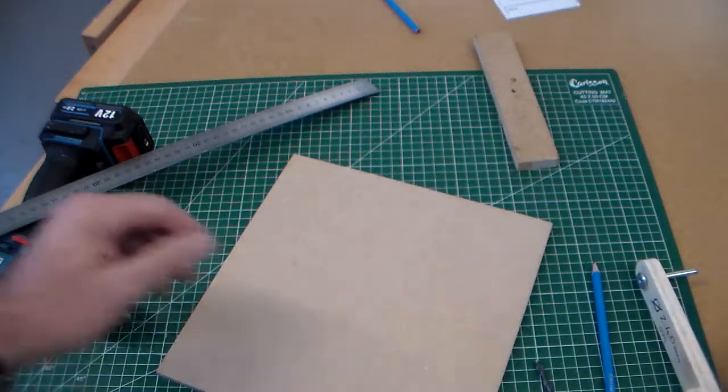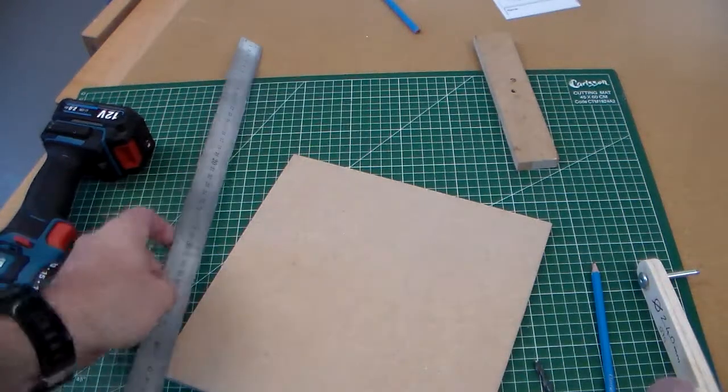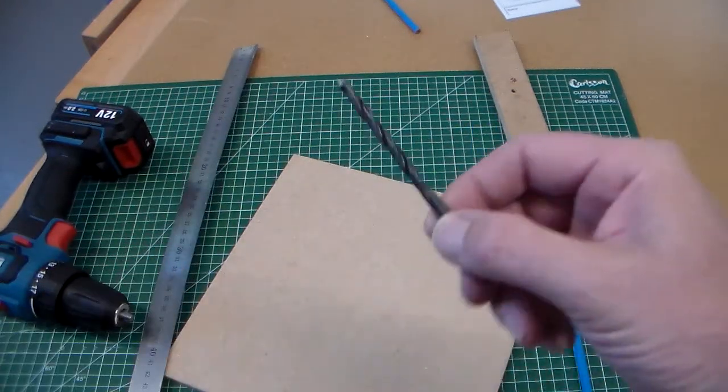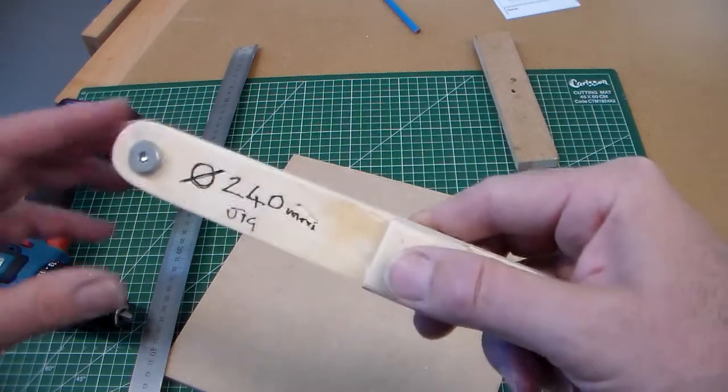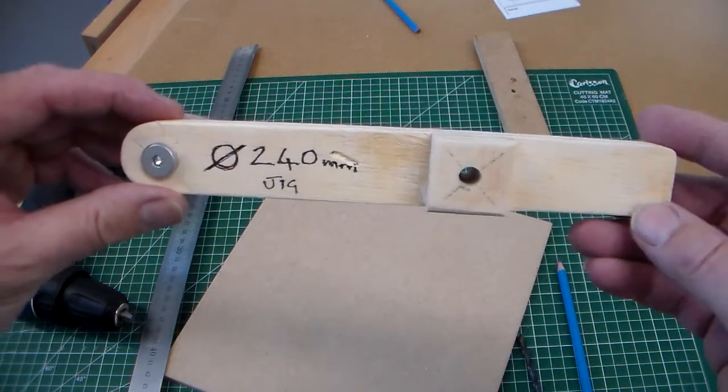The equipment we're going to be using, we're going to be using a steel ruler, a pencil, a 5.5mm twist drill, and this piece of equipment here, this is what we call a jig.